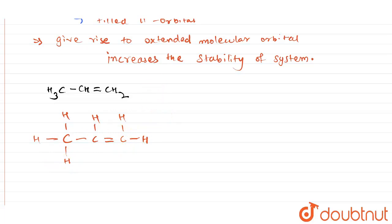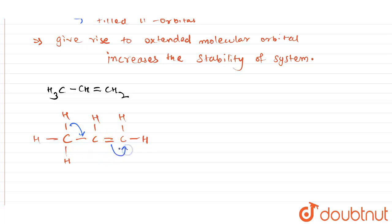What happens here is bond shifting — the interaction of the sigma bond occurs. The sigma bond between carbon and hydrogen can break, and the electrons shift over, resulting in the formation of a double bond. The double bond also shifts in position, giving a new resonance structure where the first carbon bears a positive charge.